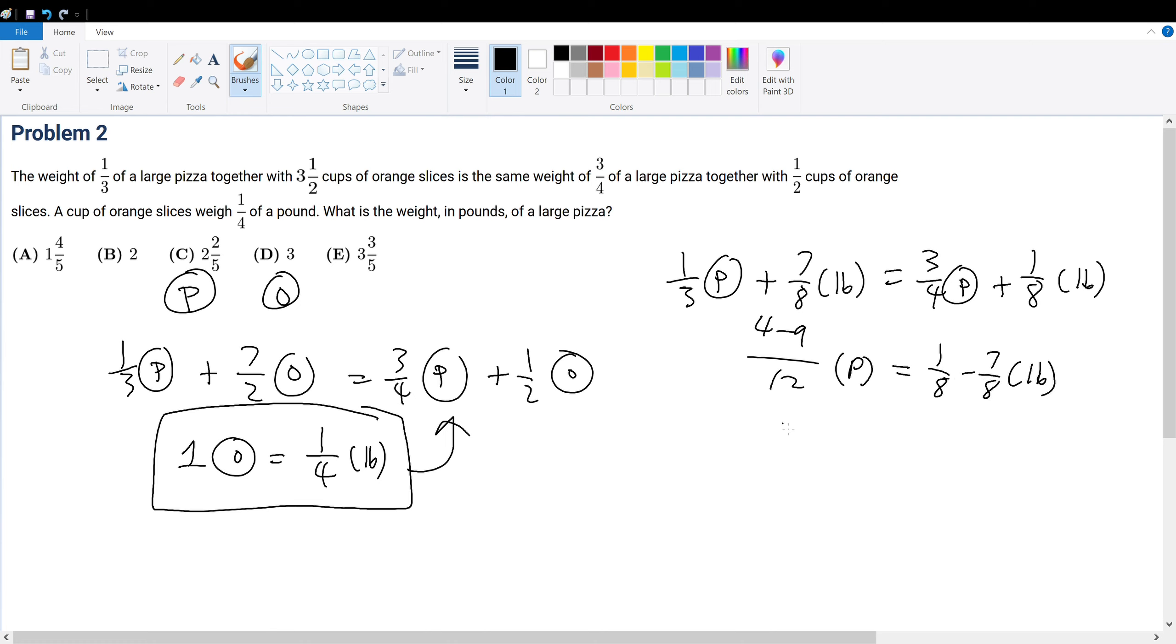Therefore, five over twelve p is equal to six over eight pounds. How did I get the negative to be subtracted out? Well, this is a negative and that's a negative, so negative negative becomes positive.